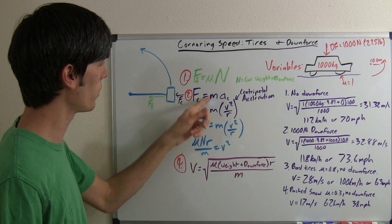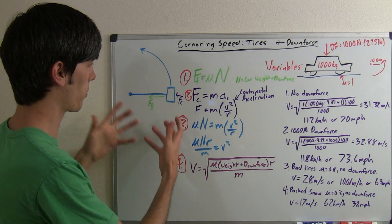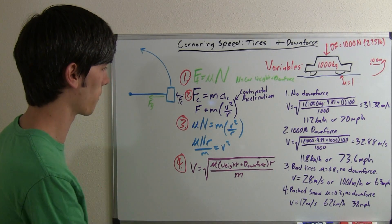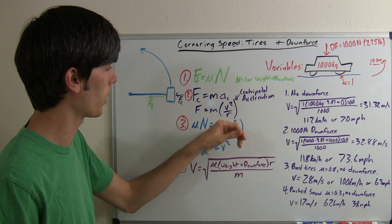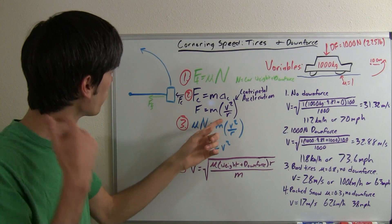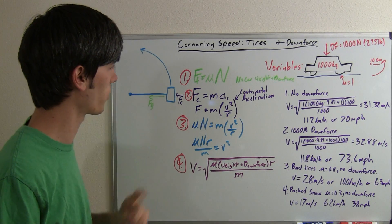Our third step, set these two equal to each other, because these are basically two ways of representing the same thing. So, mu times n is equal to m times v squared over r. R here is the radius of this turn.